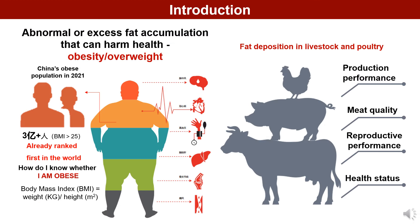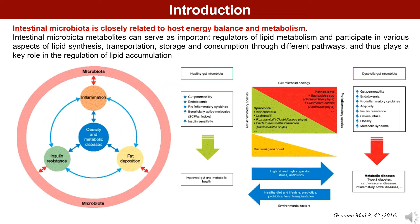As we all know, overweight and obesity are defined as abnormal or excessive fat accumulation that presents a risk to health. Similarly in livestock and poultry, fat deposition will also affect production performance, meat quality, reproductive performance, and health status. Intestinal microbiota is closely related to host energy balance and metabolism, serving as important regulators of lipid metabolism and playing a key role in the regulation of lipid accumulation.